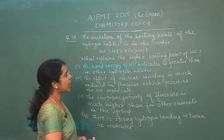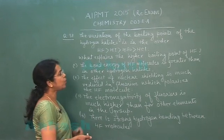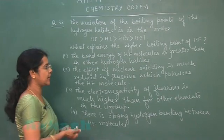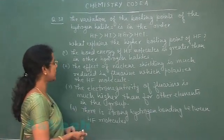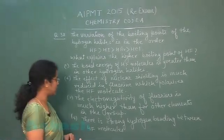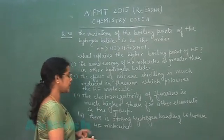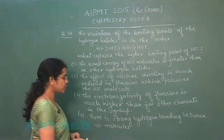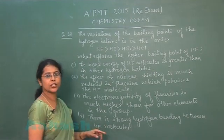First option: the bond energy of HF molecule is greater than in other hydrogen halides. Second option: the effect of nuclear shielding is much reduced in fluorine which polarizes the HF molecules. Third option: the electronegativity of fluorine is much higher than for other elements in the group. Fourth option: there is strong hydrogen bonding between HF molecules.